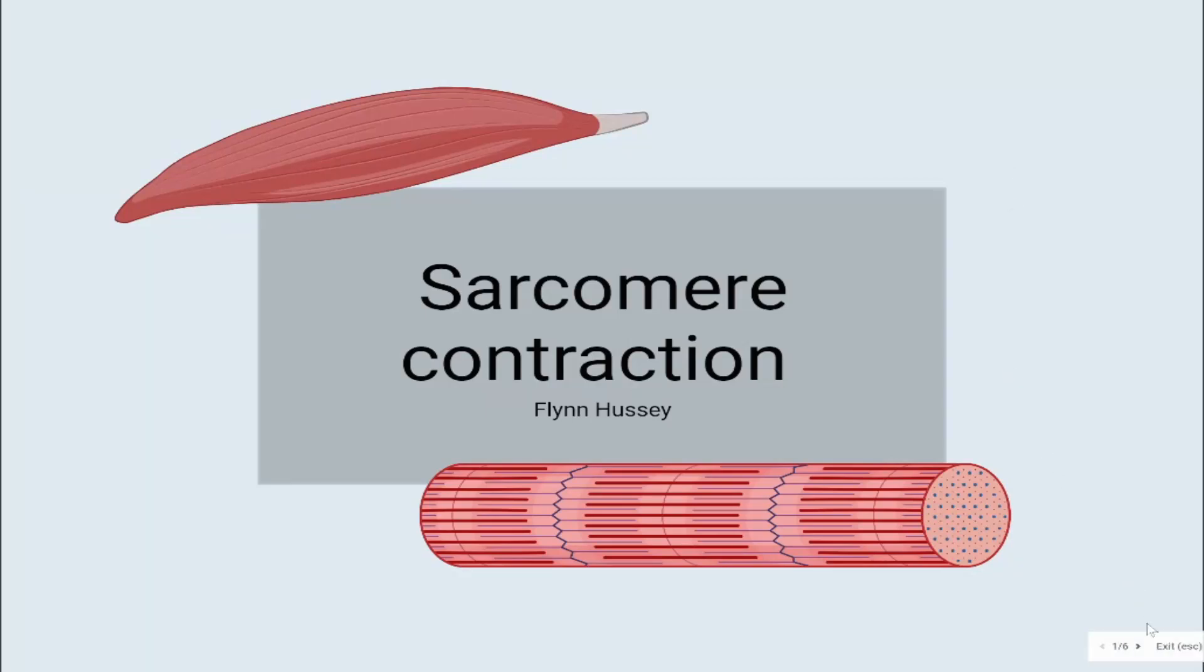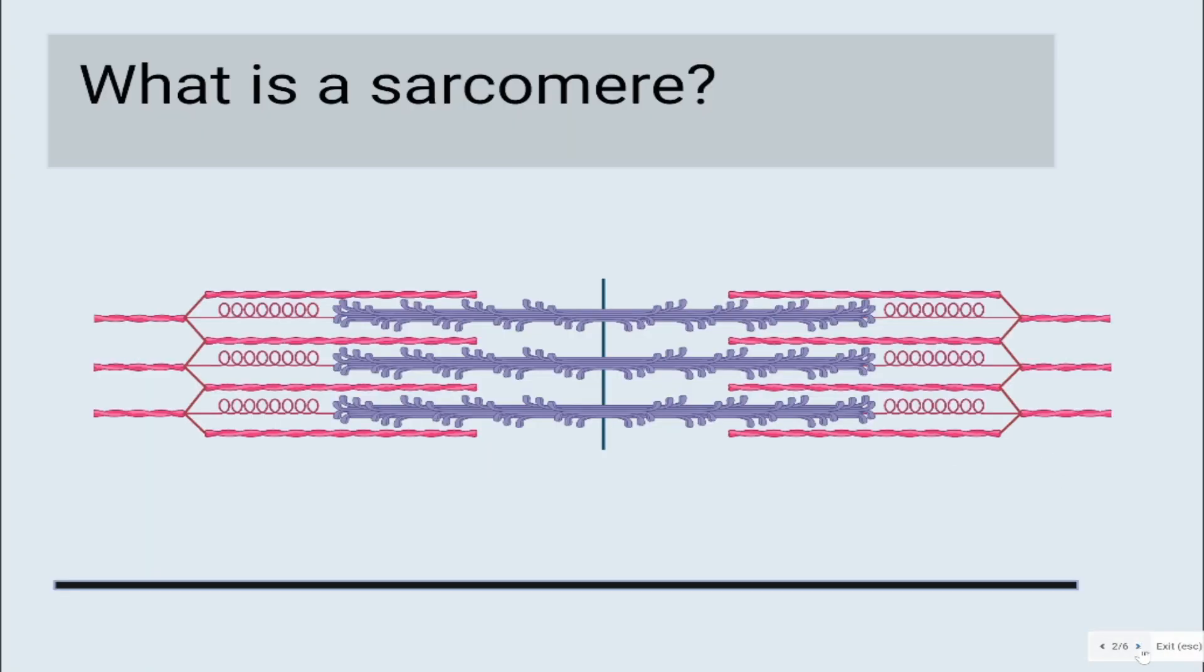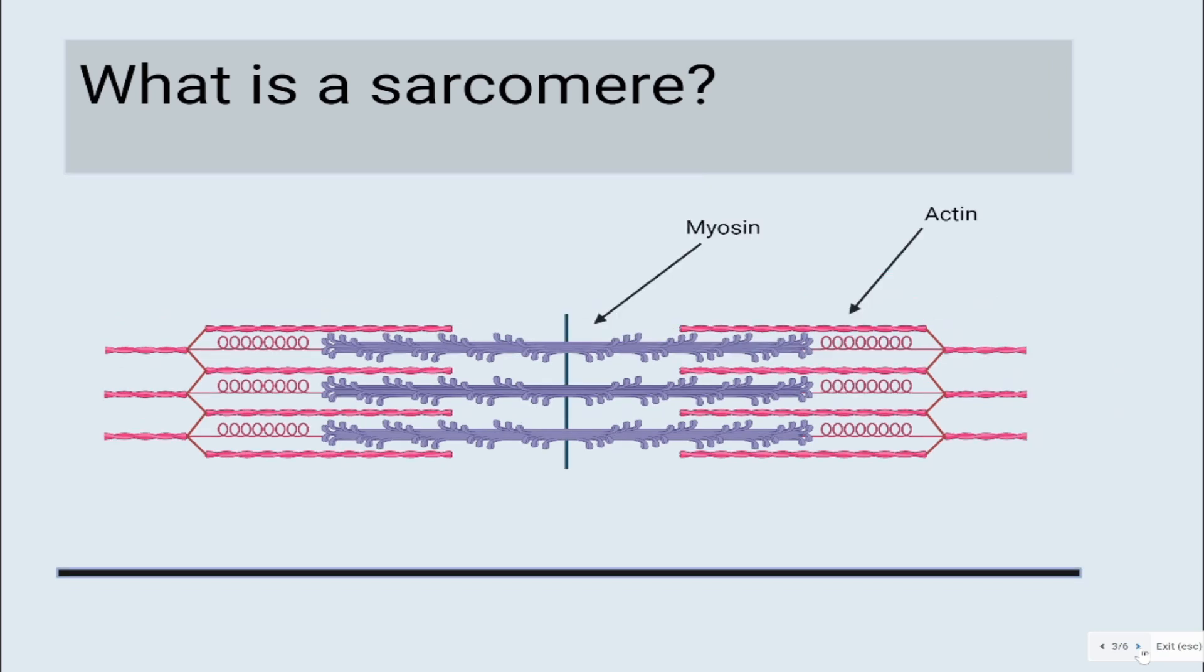Let's talk about sarcomere contraction. What is a sarcomere? A sarcomere is the most basic contractile unit of a muscle fiber. Each sarcomere is composed of two main protein filaments, myosin and actin.